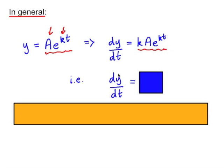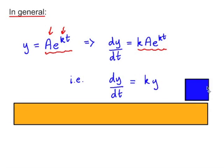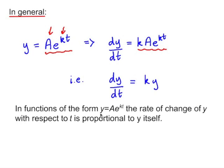So really, what we're doing is multiplying the original function, which is y, by k. So what we find is that any function in the form y equals ae to the kt, the rate of change of y with respect to t is proportional to y itself. So it's just y multiplied by that scalar value, k.